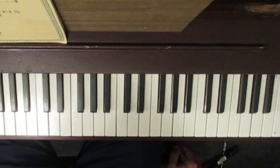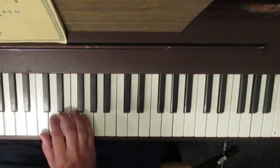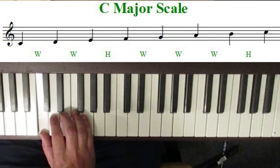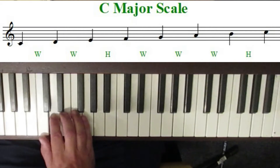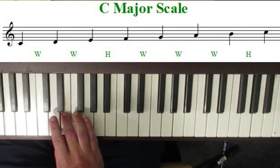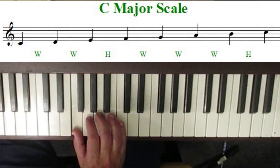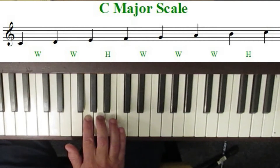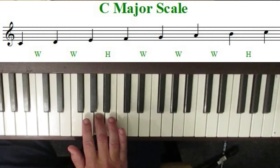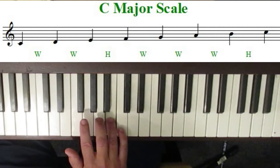So a major scale is constructed of a series of whole steps and half steps. Starting on the note C, we're going to play a whole step up to D, another whole step up to E, and you'll notice there's no black key in between E and F, so the distance between E and F is a half-step. Then we're going to play another whole step to G, a whole step to A, a whole step to B, and a half-step to finish it off at C again.